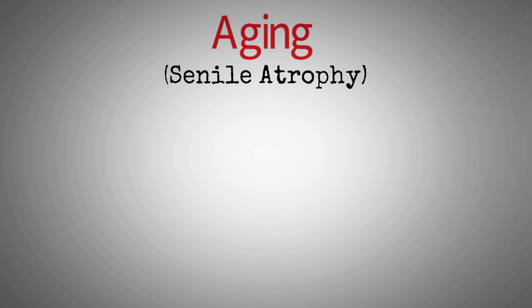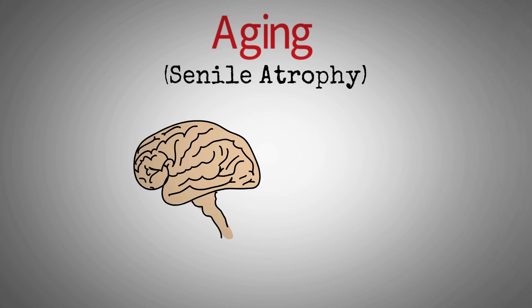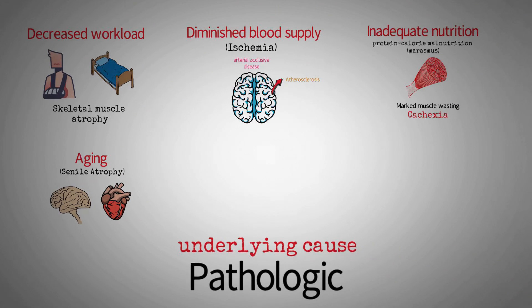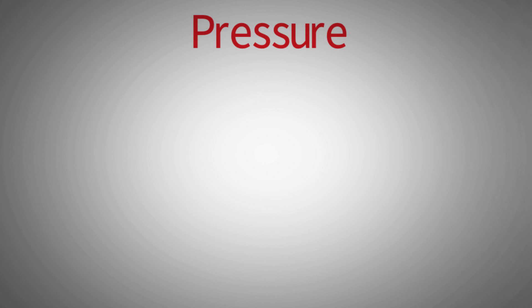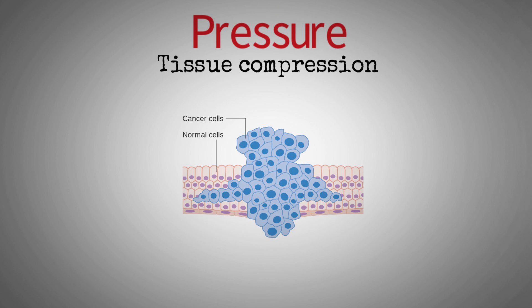Aging — senile atrophy: the aging process is associated with cell loss, typically seen in tissues containing permanent cells, particularly the brain and heart. Pressure: tissue compression for any length of time can cause atrophy. An enlarging benign tumor can cause atrophy in the surrounding compressed tissues.